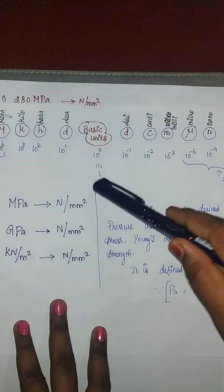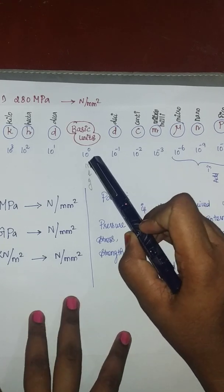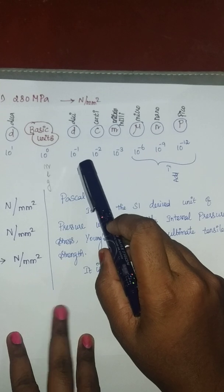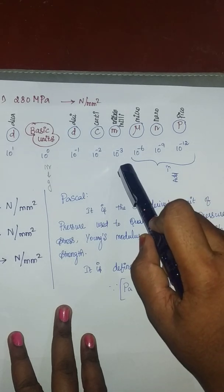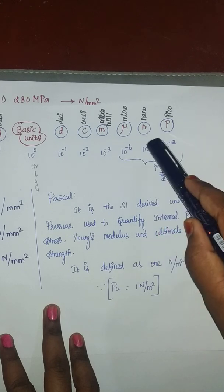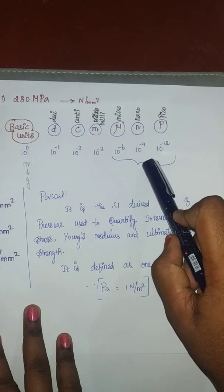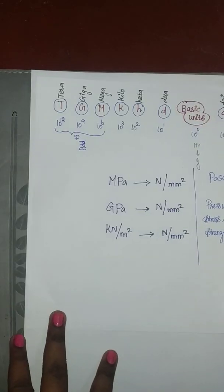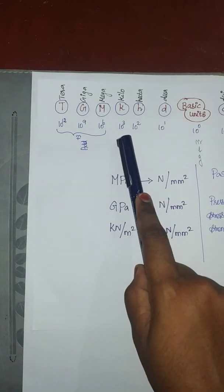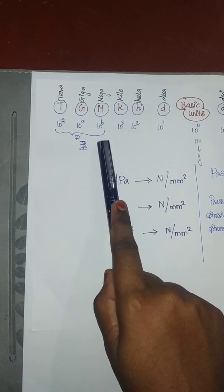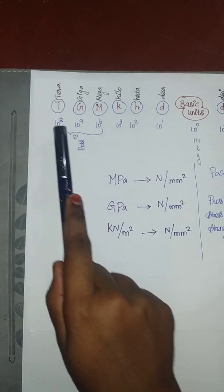The basic unit is fixed at 10 power 0. Deca is 10 power 1, hecta is 10 power 2, kilo is 10 power 3, mega is 10 power 6, giga is 10 power 9, tera is 10 power 12. On the other side, deci is 10 power minus 1, centi is 10 power minus 2, milli is 10 power minus 3, micro is 10 power minus 6, nano is 10 power minus 9, pico is 10 power minus 12.